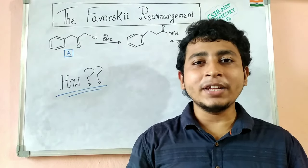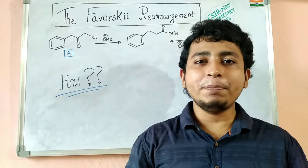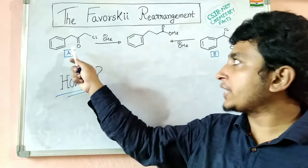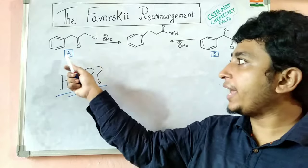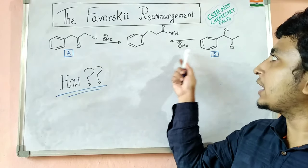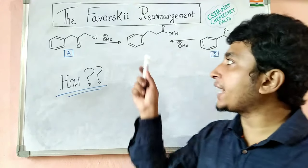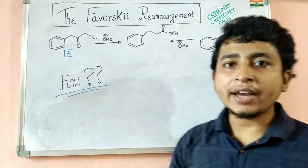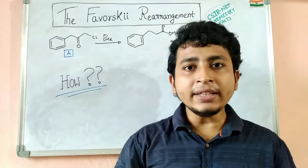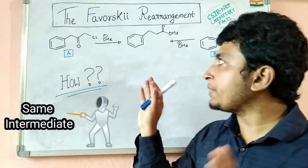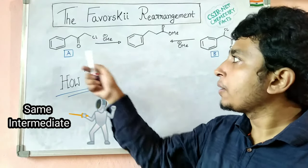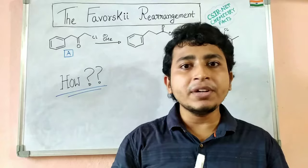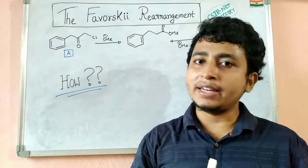In the year 1944, a peculiar observation was made by American chemists when they observed that two isomeric alpha-haloketones A and B were treated with methoxide base and both gave the same product. To explain how this is possible, they suggested a common intermediate for both cases. But how the same intermediate forms from different reactants — I will show you the mechanism now.